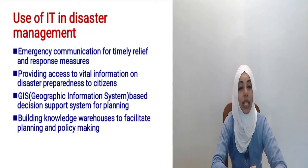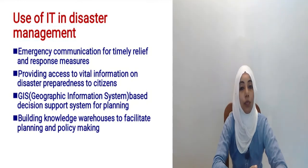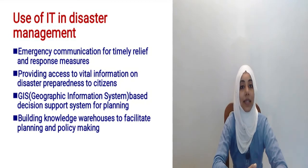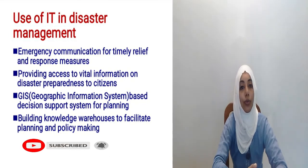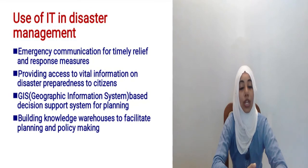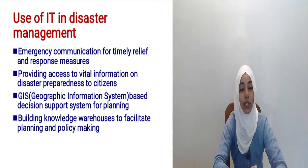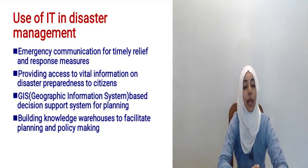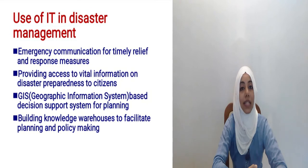IT will facilitate emergency communication and provide access to vital information on disaster preparedness to citizens. For these purposes, we can use GIS, GPS, Drones, and Decision Support Systems. GIS is Geographic Information System and GPS is Global Positioning System. GIS and GPS can be used to locate the most vulnerable areas and specific locations such as buildings. They also help in building knowledge warehouses and facilitating planning and policy making.